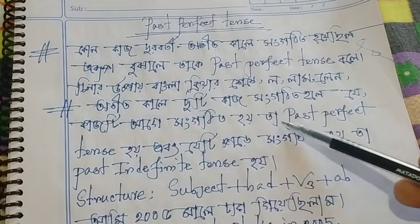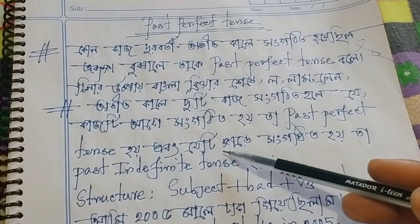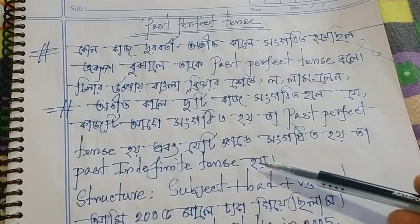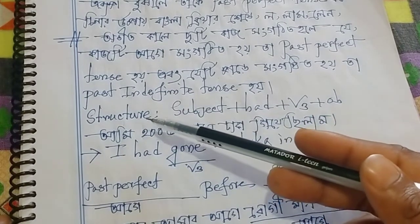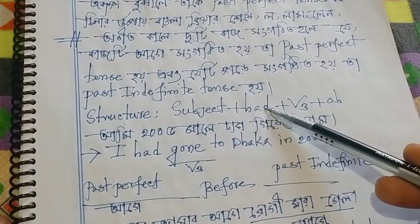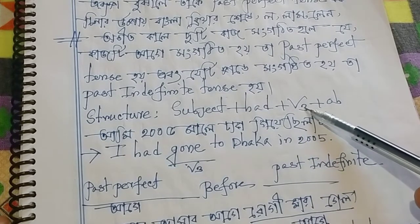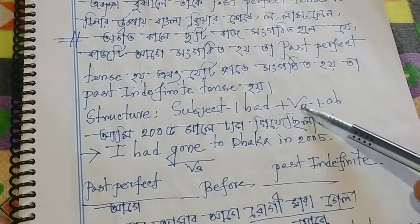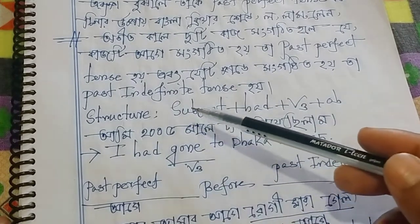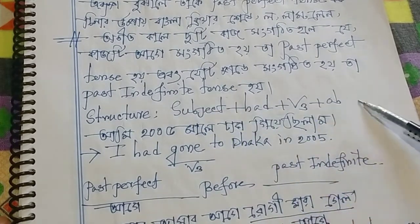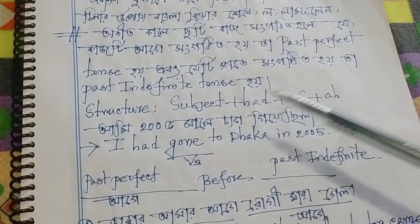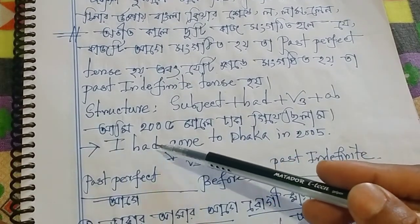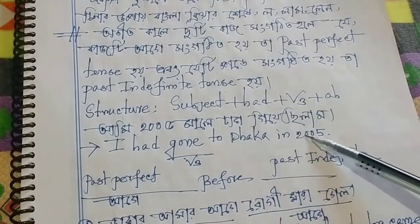The Past Perfect Tense structure is: Subject + had + V3 (past participle) + object. The Present Perfect structure is: Subject + have/has + V3 + object. For example: I had gone to the place in 2005.